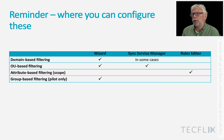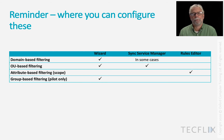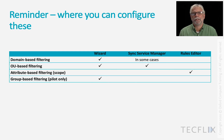For OU-based filtering, you initially set it up in the wizard, and you can absolutely subsequently change it in the Sync Service Manager, as you've seen in a recent demo. There's no penalty for doing so, and it is much quicker than running the wizard. It's absolutely fine to do.